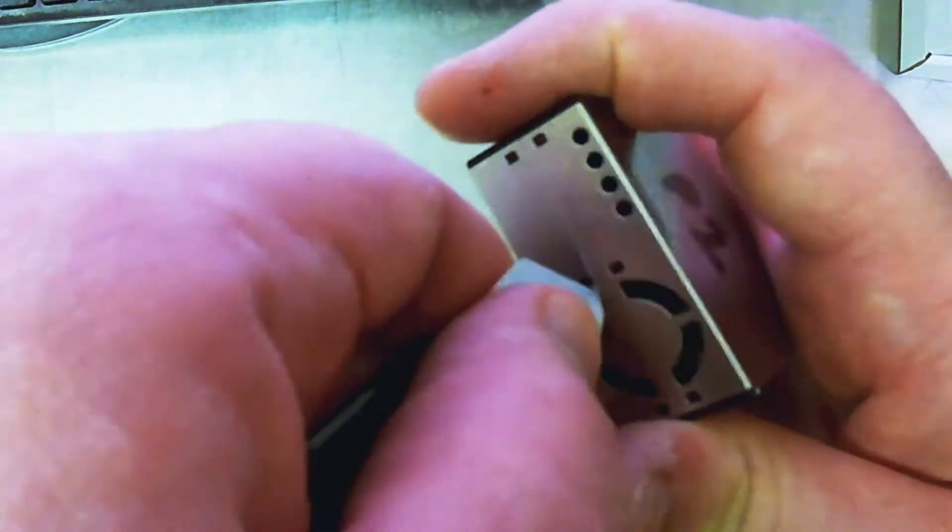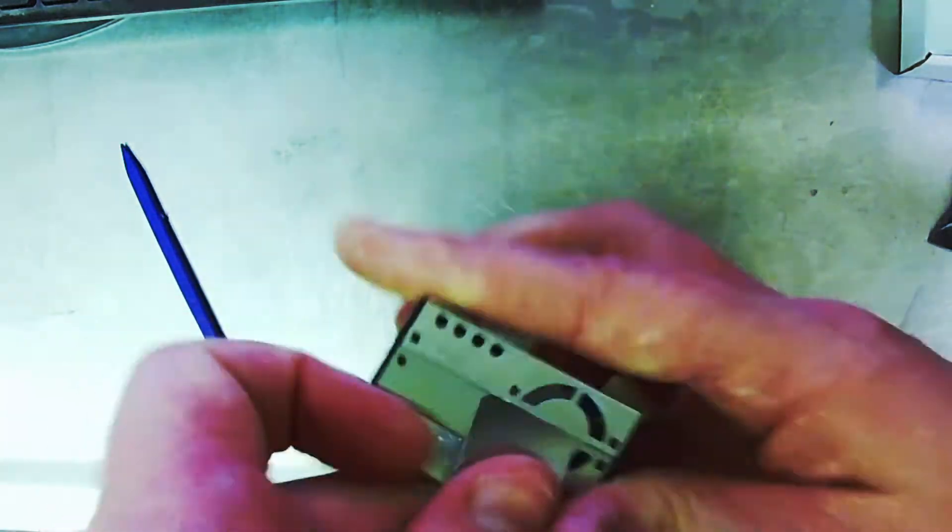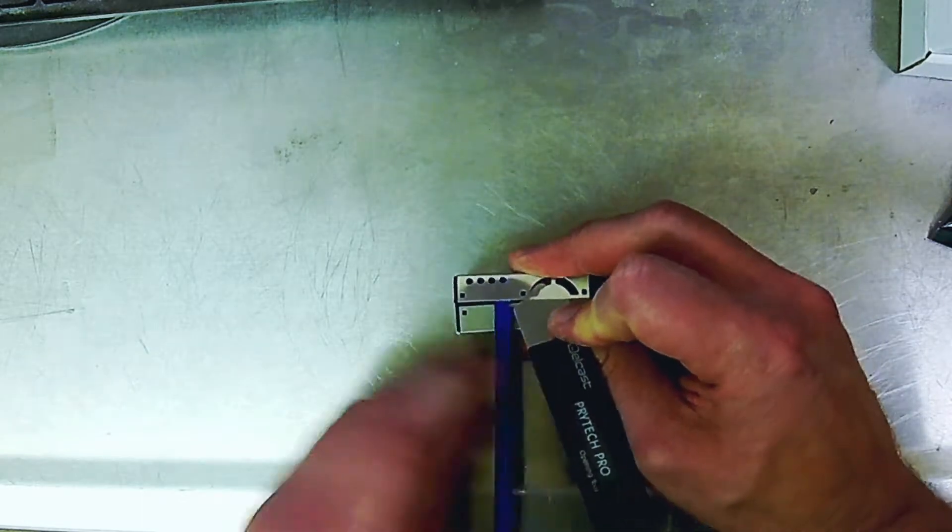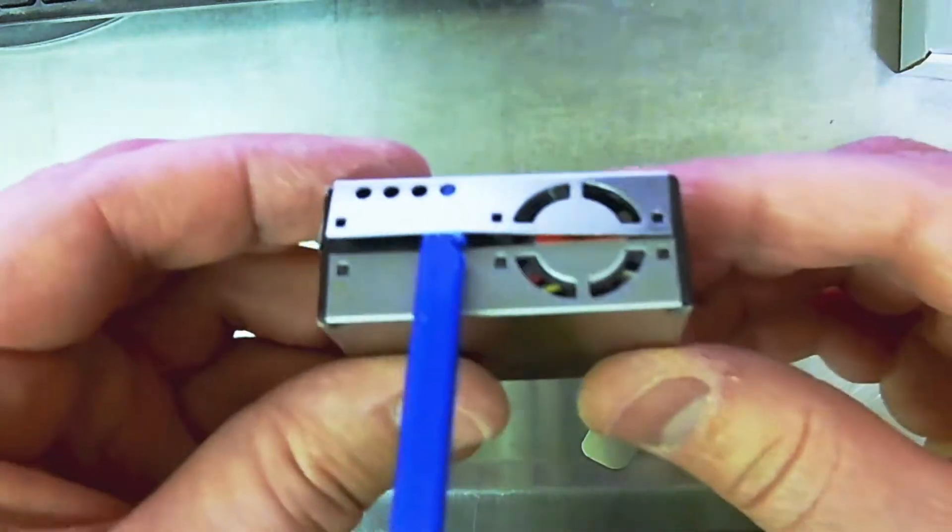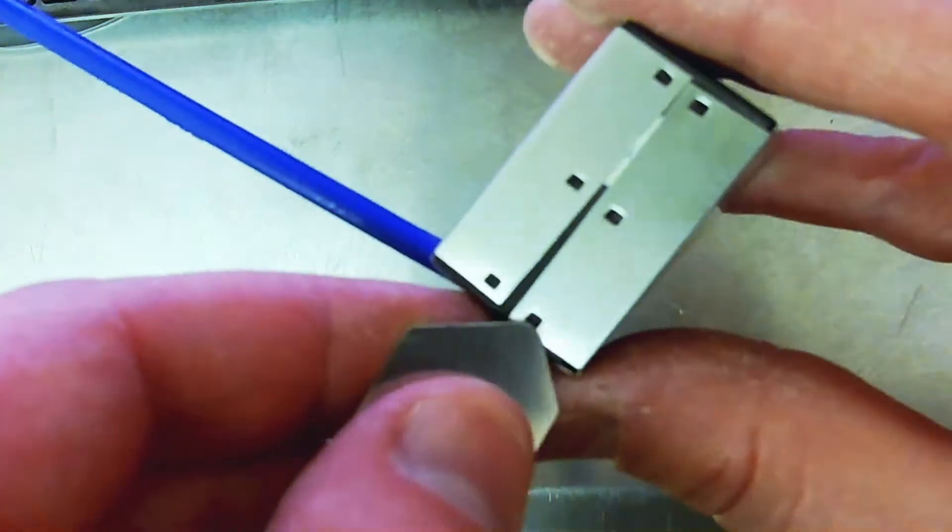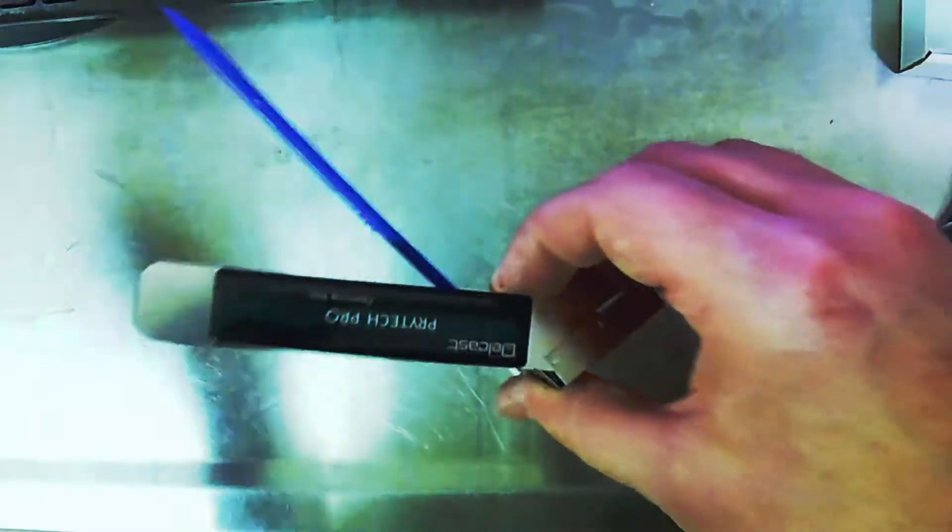I like to split it here around the fan because there's an opening. Pry that out a little bit and slip in a tool to hold it, like so. And move to two more sides. We'll do the same thing.